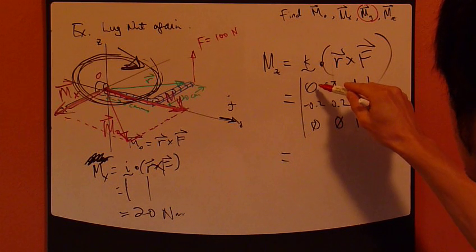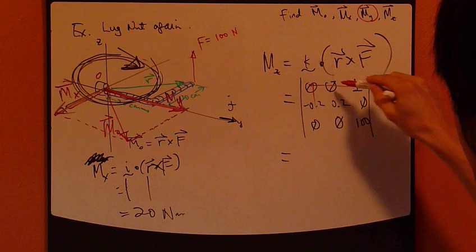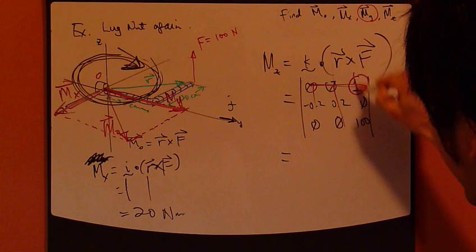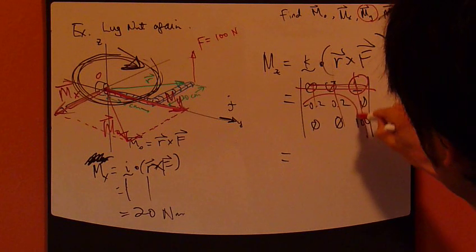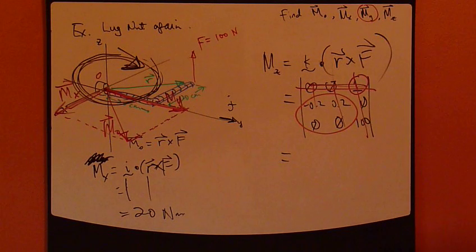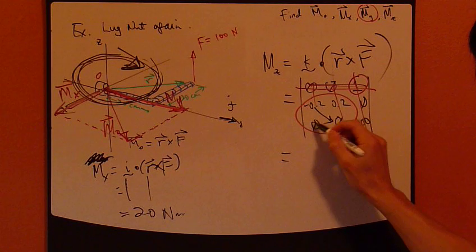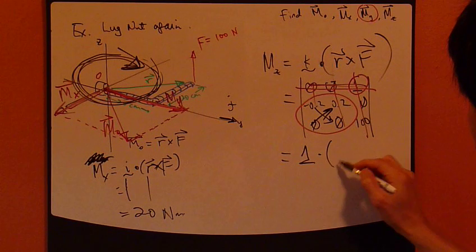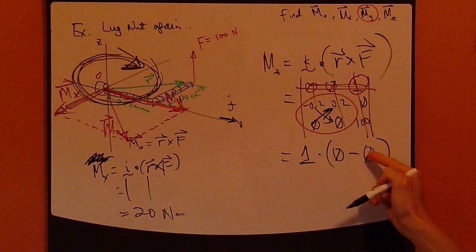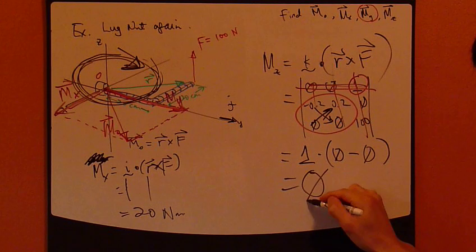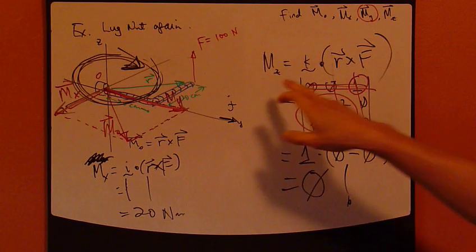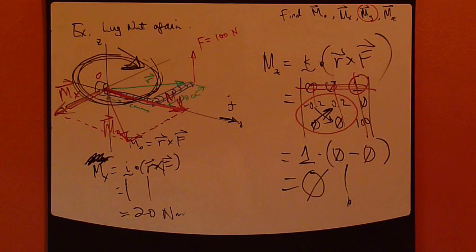So, determinant. This, of course, gives 0. This gives 0. The only term that would survive is if you take this. Okay? So, 1 times the cross multiplication of these four guys. Okay? Look at this. You have 0 here, 0 here. So, when you multiply, cross multiply, it gives you 0. So, this equals 1, 0, minus 0. So, 0 times 1. That gives you 0. So, moment about z-axis is 0. There's no moment.